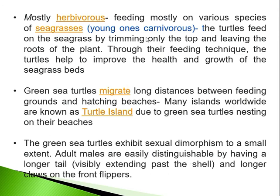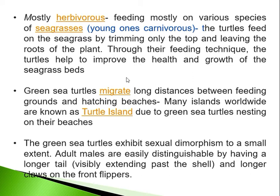They feed on various species of sea grasses and are mostly herbivorous, though the young ones are somewhat carnivorous. Adult turtles feed on sea grass by trimming only the top of the grass, leaving the stumps and roots. This feeding technique improves the vegetation because only the top is trimmed and the roots remain. So the turtles help to improve the growth and health of the sea grass beds, which is one of their ecological importances.